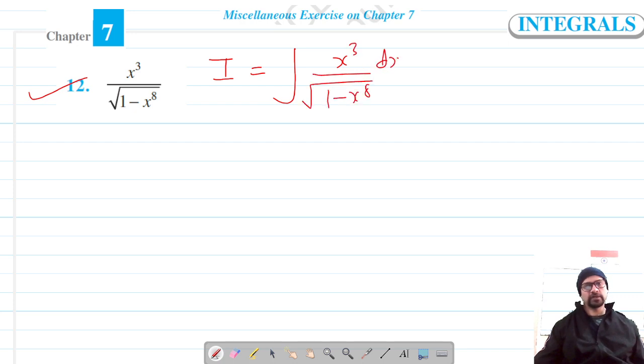This x raised power 8 can be written to get x cubed. I'm going to write it as x raised power 4 the whole squared, and now it's ready for substitution because x raised power 4 when substituted for t.